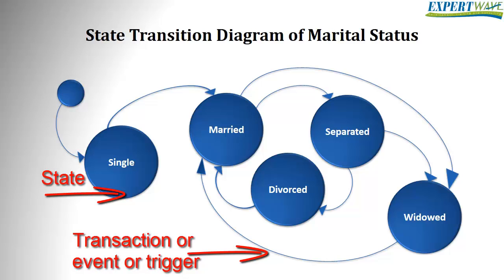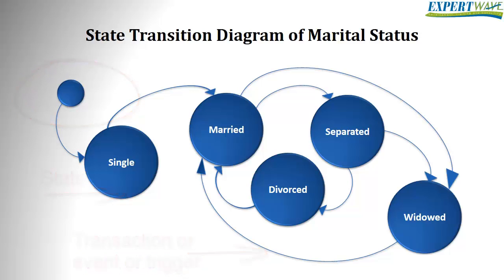To read this diagram, start with the black circle in the diagram wherever it is — this is usually the start point of the diagram. A person starts by being a single person, then he could only be married or stay in the single state forever.